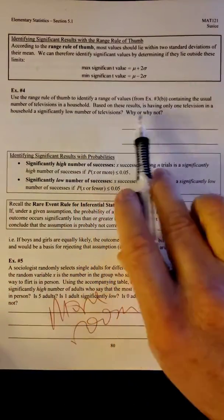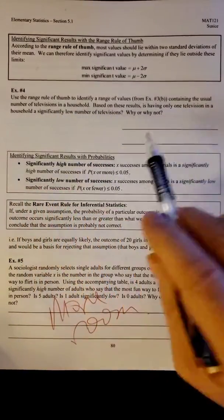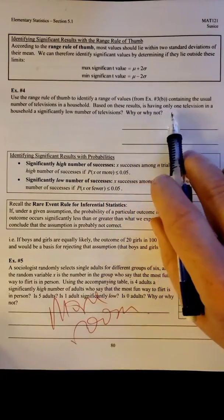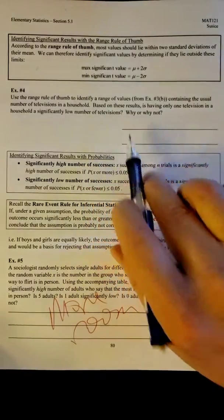Now, looking at the previous problem, problem 3B, looking at the usual number of televisions or the significant number of televisions based on these results: Is having only one television in a household a significantly low number of televisions? Why or why not?